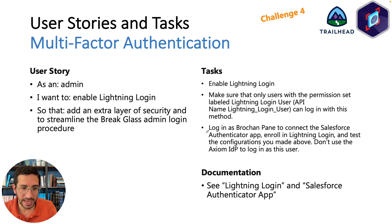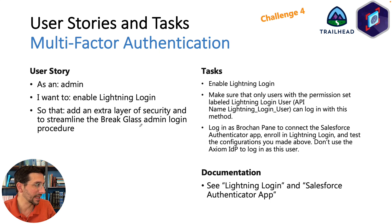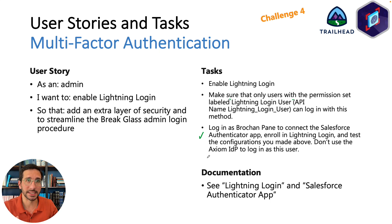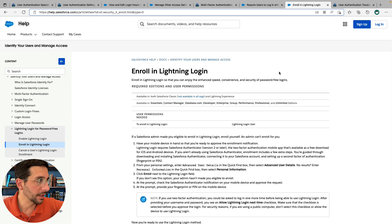Challenge Four is still about Multi-Factor Authentication and involves enabling Lightning Login as an extra layer of security to streamline the Break Glass admin login procedure. Make sure you enable Lightning Login and that only users with the permission set labeled 'Lightning Login User' with that API name can log in with this method. You're going to log in as Brochan Pain to connect the Salesforce Authenticator app, enroll in Lightning Login, and test the configurations. You actually have to complete the Lightning Login process because that's what the challenge tests. I found the 'Enroll in Lightning Login' article helpful — it's linked in the description below.